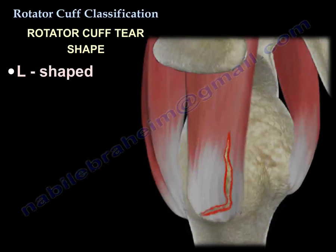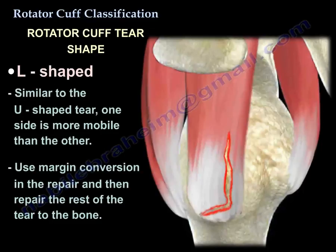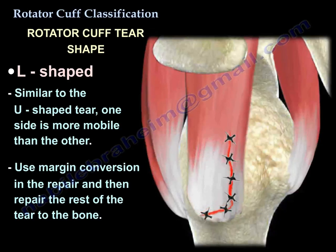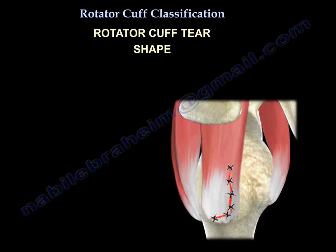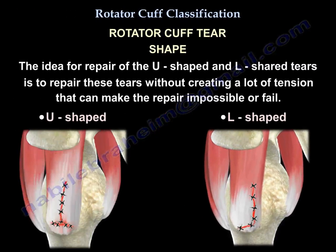The L-shaped tear is similar to the U-shaped tear, but one of the leaves is more mobile than the other. We use margin convergence in the repair and then repair the rest to the bone. The whole idea for U-shaped and L-shaped tears is to repair them without creating excessive tension, which could make the repair impossible or cause it to fail.